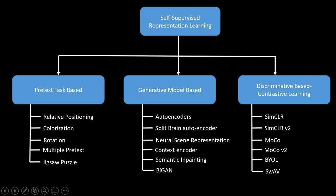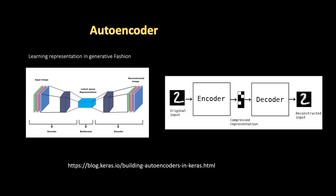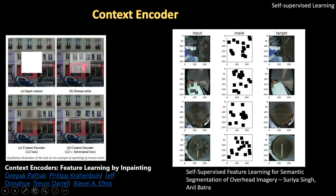Let's discuss generative based self-supervised representation learning. The simplest one is the autoencoder — you have a representation network to learn a representation and a generator network to reconstruct the input from that representation. A similar idea was implemented in the paper Context Encoder, where you take an image, cut out a patch, and task the network to generate the missing area. The reconstruction using just L2 loss is shown, and also reconstruction using L2 plus adversarial loss.